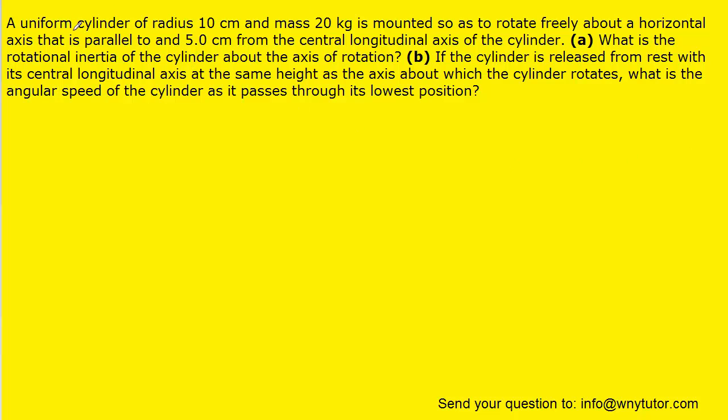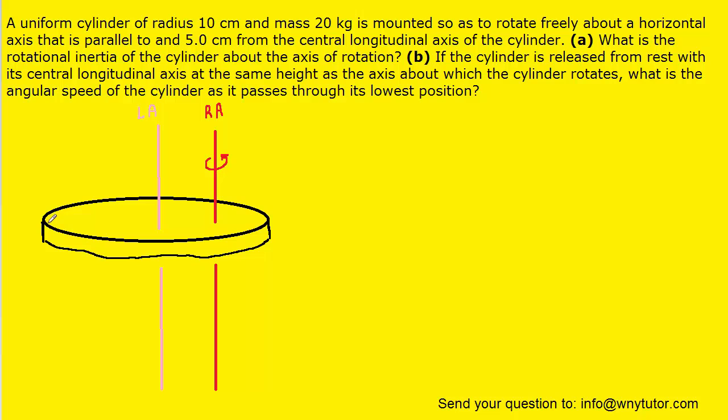What we'll do first is draw a picture of the cylinder. So the cylinder is shown in black, and then right through the center of the cylinder we have this pink line which we've labeled the longitudinal axis. It goes right through the center of the cylinder.